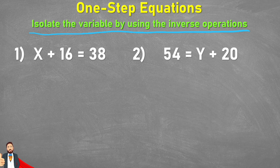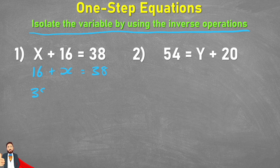Each of these number sentences has a number family. For example, the first one: x plus 16 equals 38. We could also have 16 plus x equals 38, or 38 subtract 16 equals x, or 38 subtract x equals 16. They are all number sentences in the same number family.